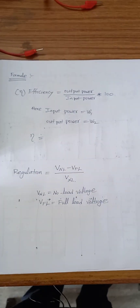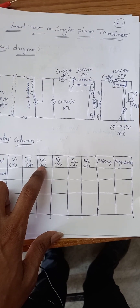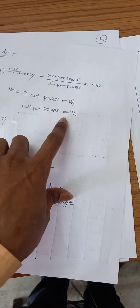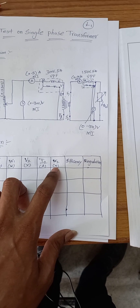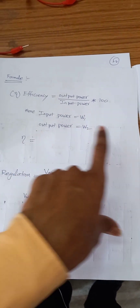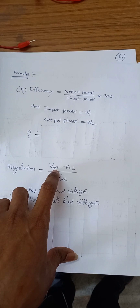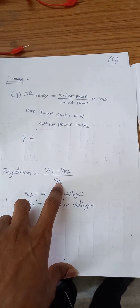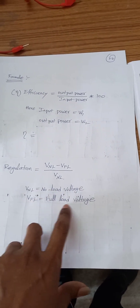Input power is W1. Observe in the tabular column — primary side power is W1, which is the input power. Output power is W2, meaning whatever power is measured at the secondary side is the output power. After taking readings, we will calculate the efficiency. Regulation is given by: V_NL minus V_FL divided by V_NL, where V_NL is the no-load voltage and V_FL is the full-load voltage.